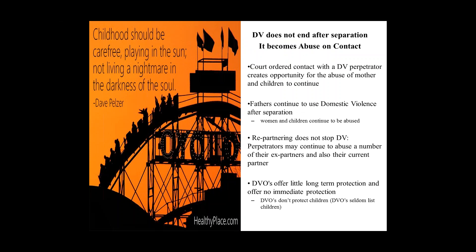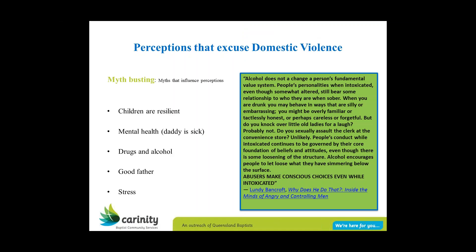Both mother and children obviously continue to be abused through contact. Sometimes re-partnering can distract the perpetrator, but not always — some perpetrators will continue to use violence against their current partner as well as a number of ex-partners and multiple children from different relationships. DVOs, whilst they are highly beneficial when used correctly, very often children aren't listed on them, and it's very difficult to get children listed on them. These risk factors don't necessarily create domestic violence, but they do exacerbate it — for children going on contact where the father has been violent and also has some mental health issues or drug and alcohol issues, the risk factors are increased.